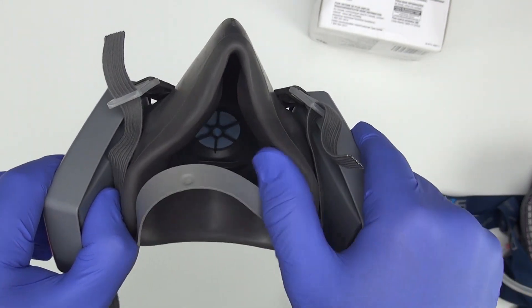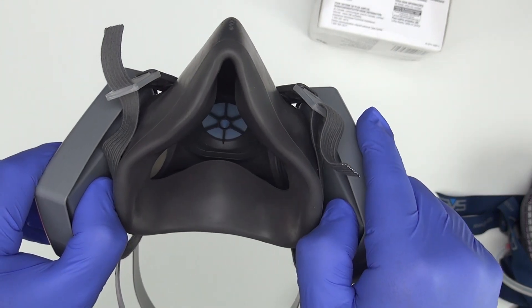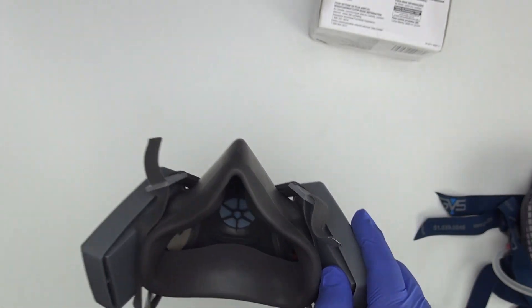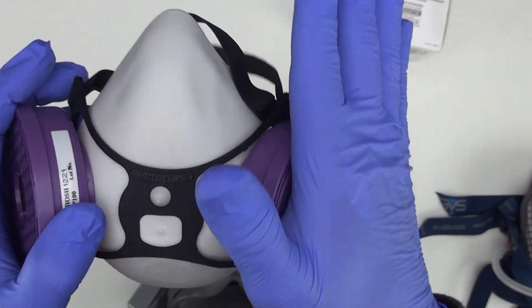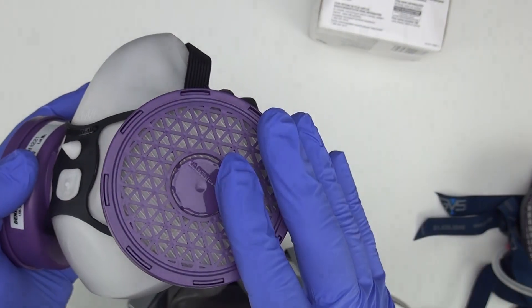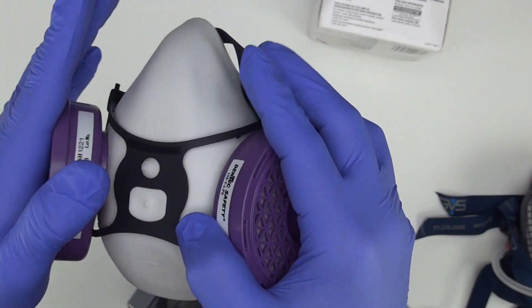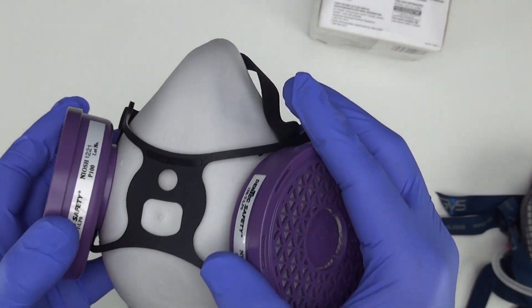And if you inhale and can't get any air through the seal of the mask, you know it's sealing well on you. You can do that with other masks. You can hold your hands over this Dentec, but it's hard to cover these big filters. You may need to put a piece of plastic over it to help you cover it for that negative pressure check.